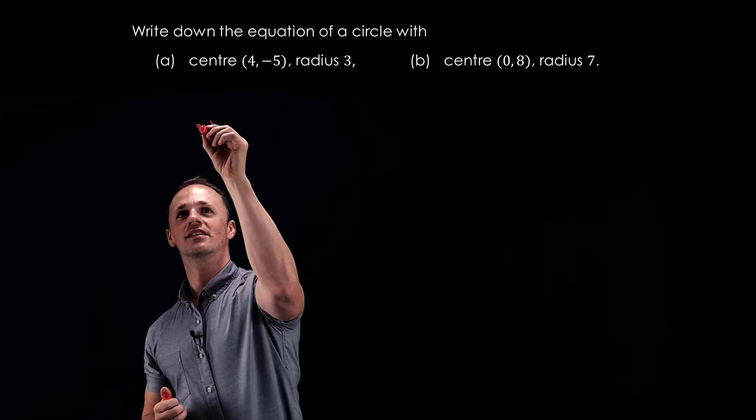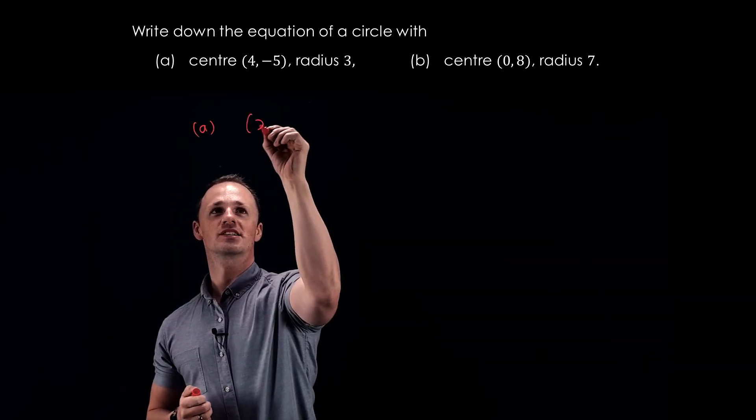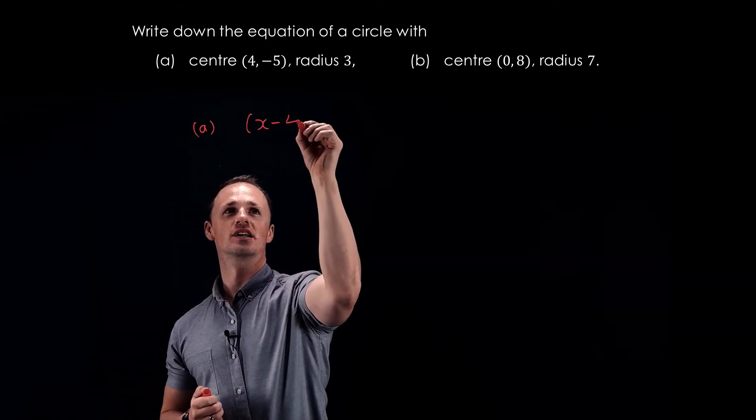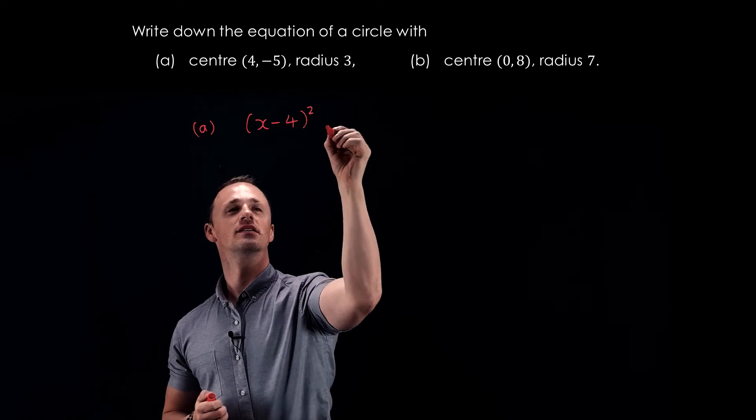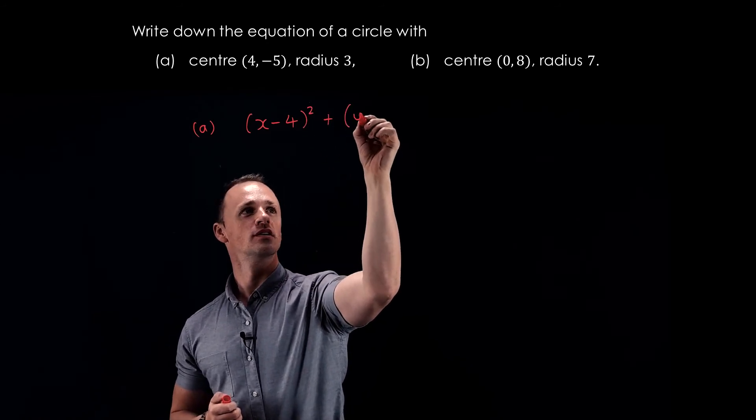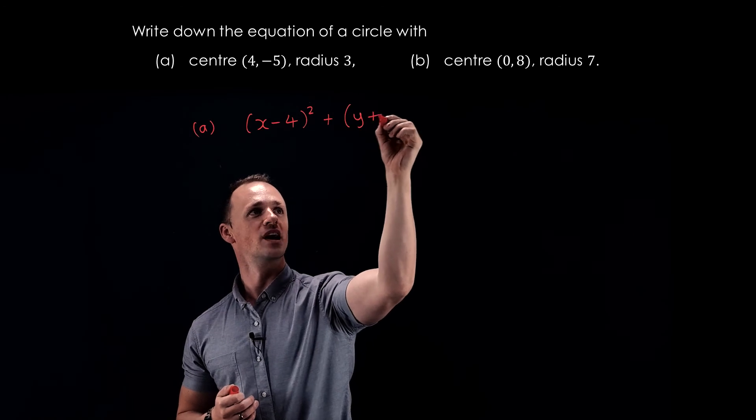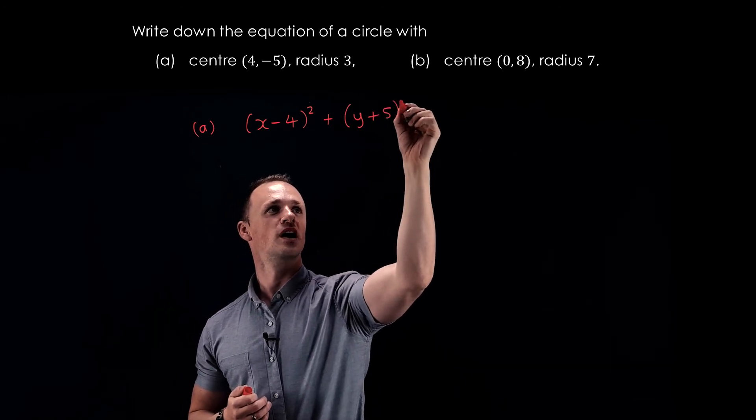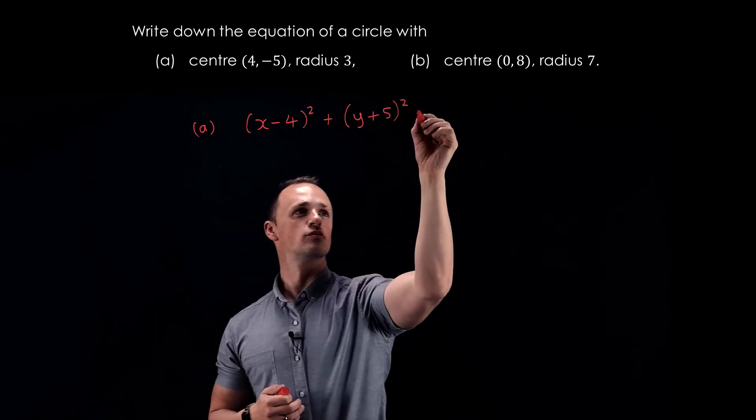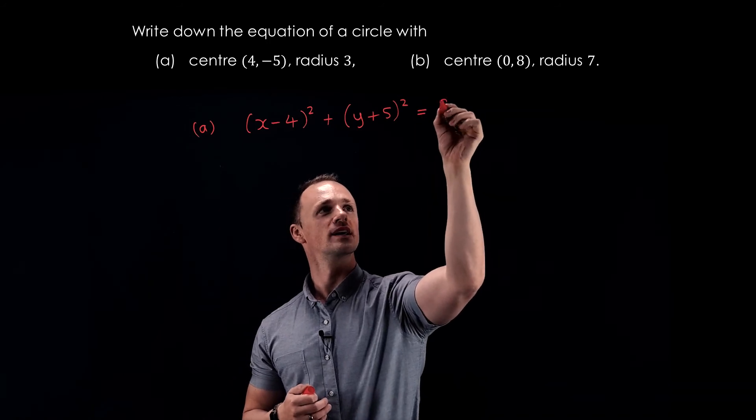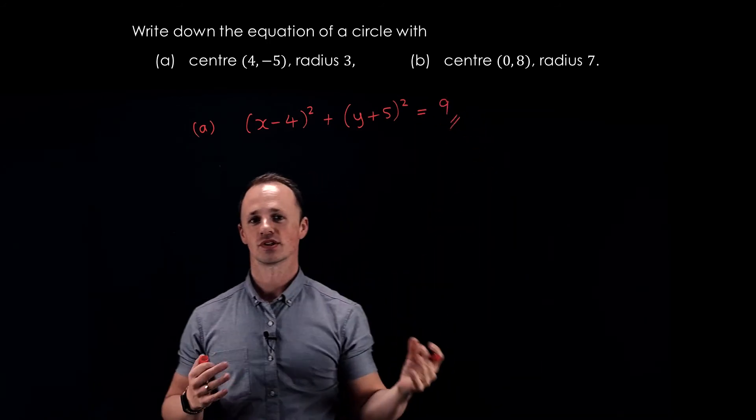For part A, we do x minus the x-coordinate of the center, so (x - 4)², plus y minus the y-coordinate. Y minus -5, we write as (y + 5)², and that equals the radius squared. 3² is 9, so that's part A.